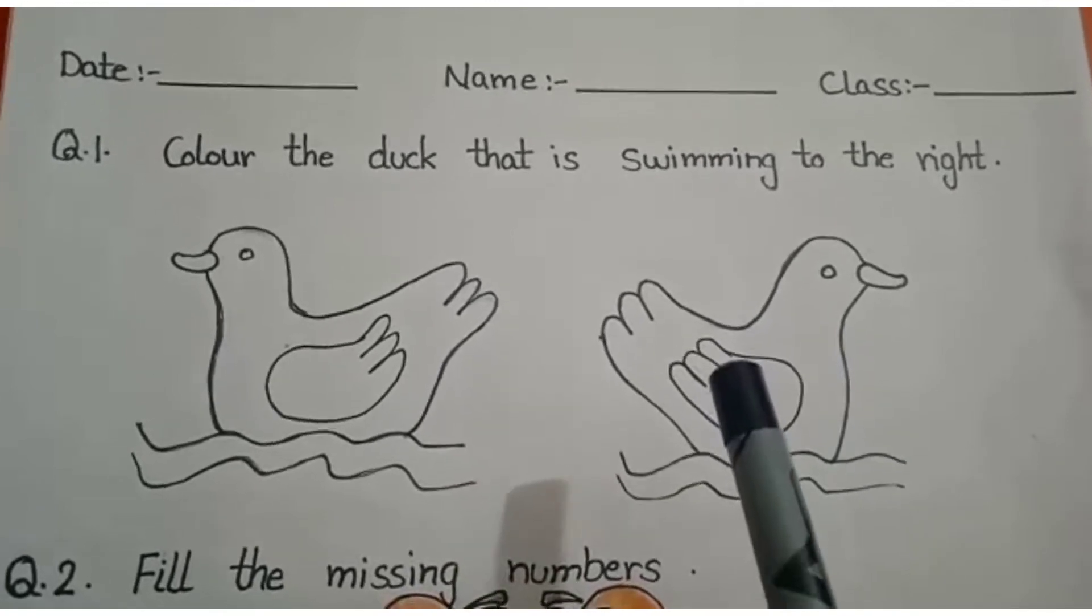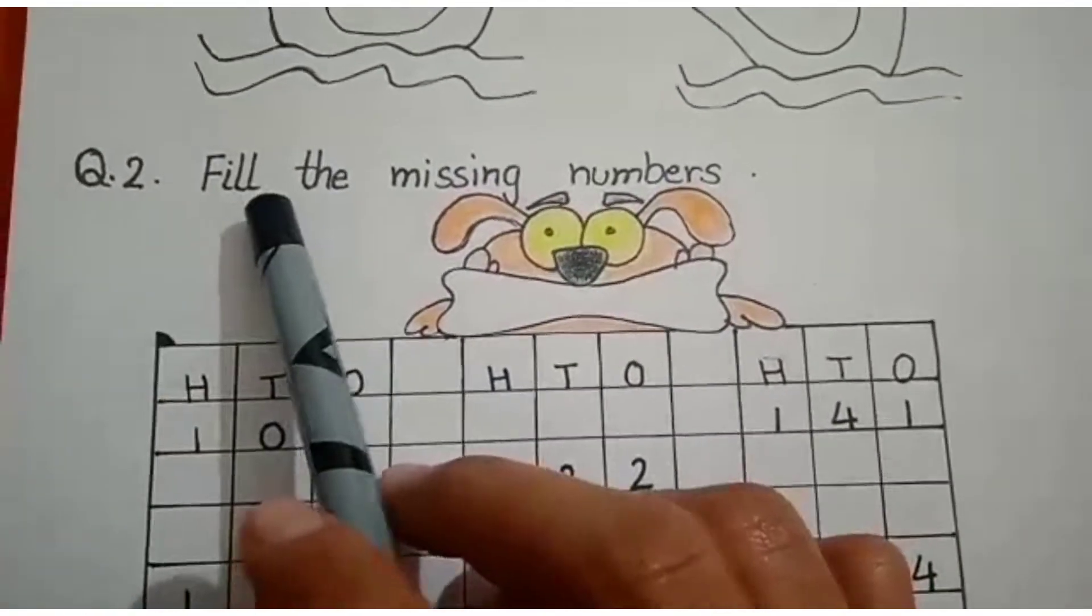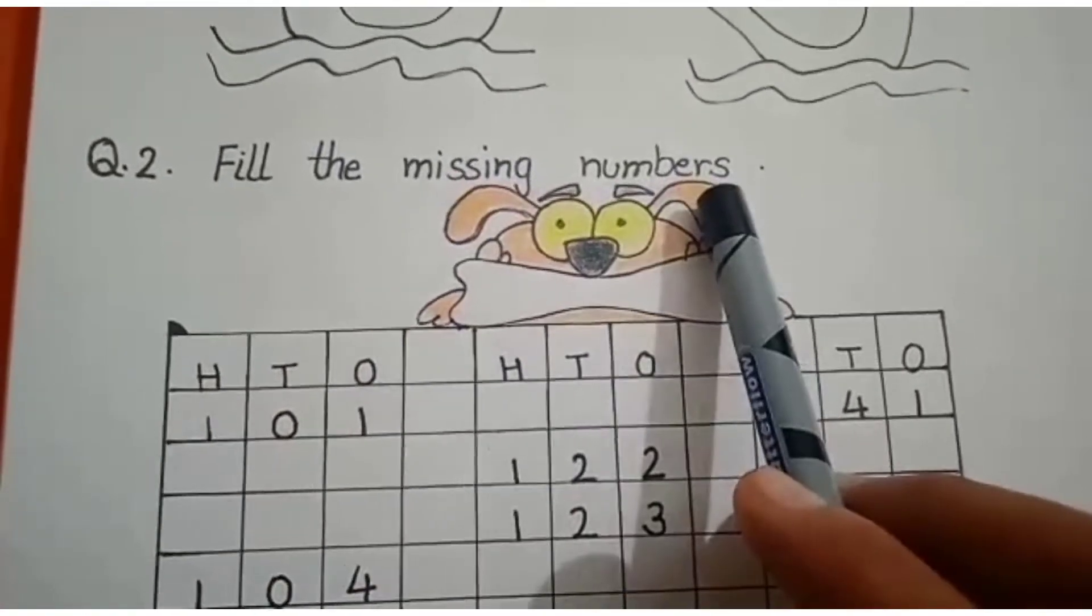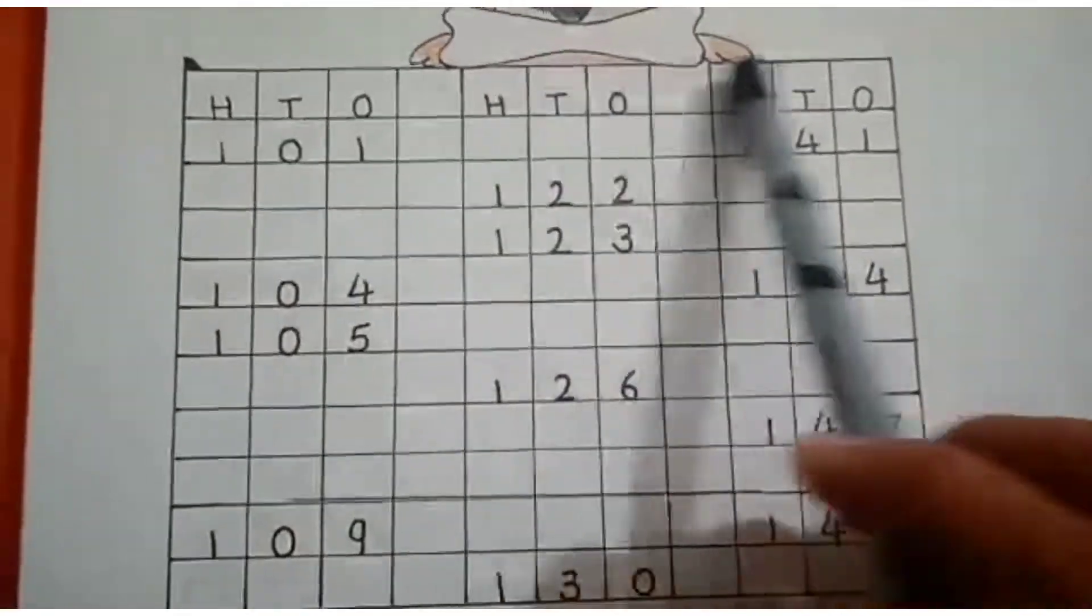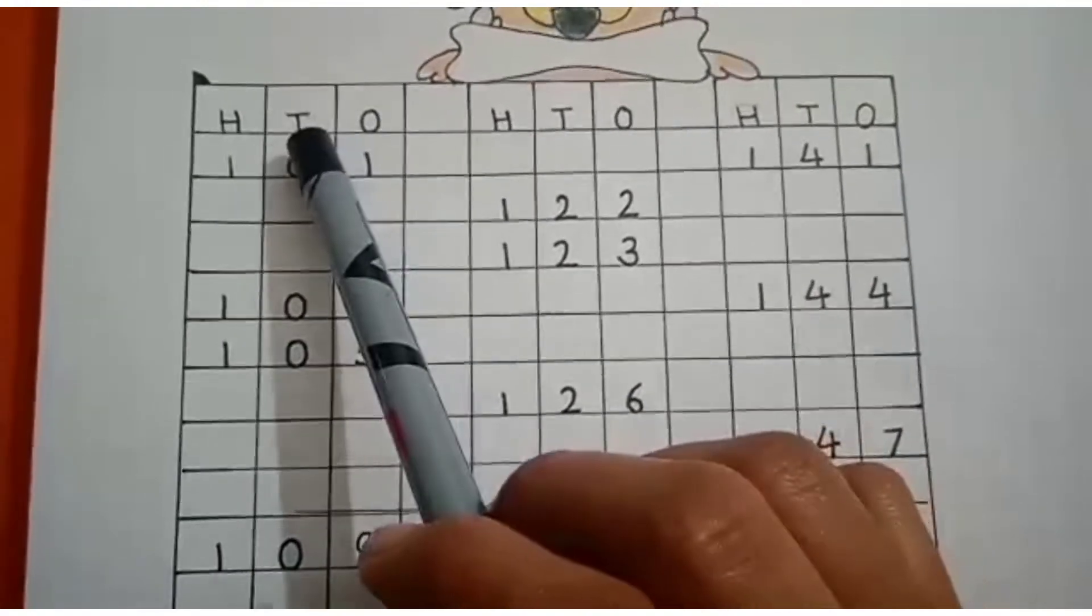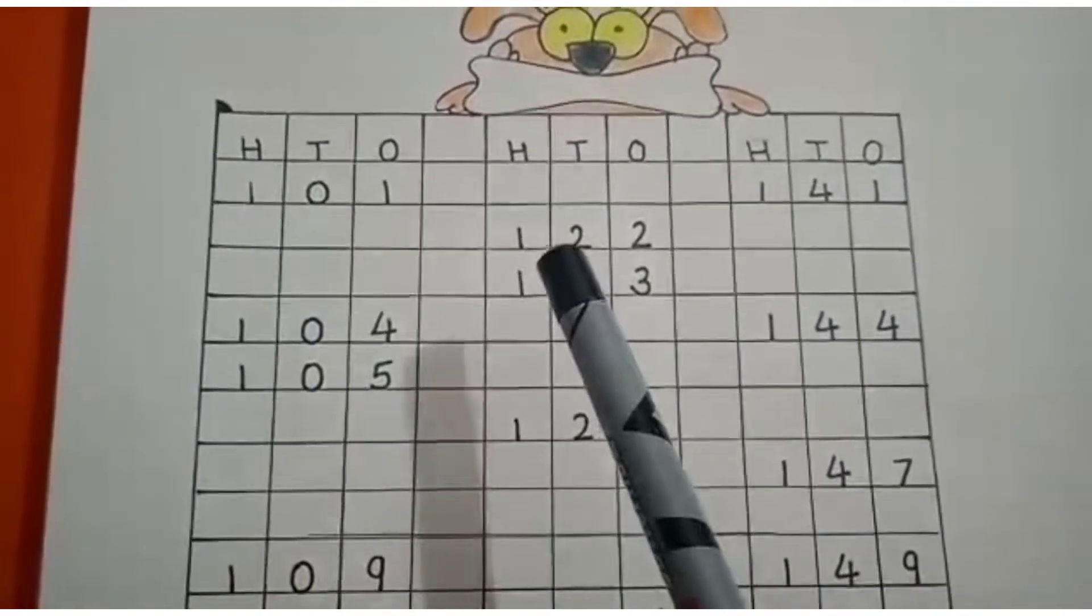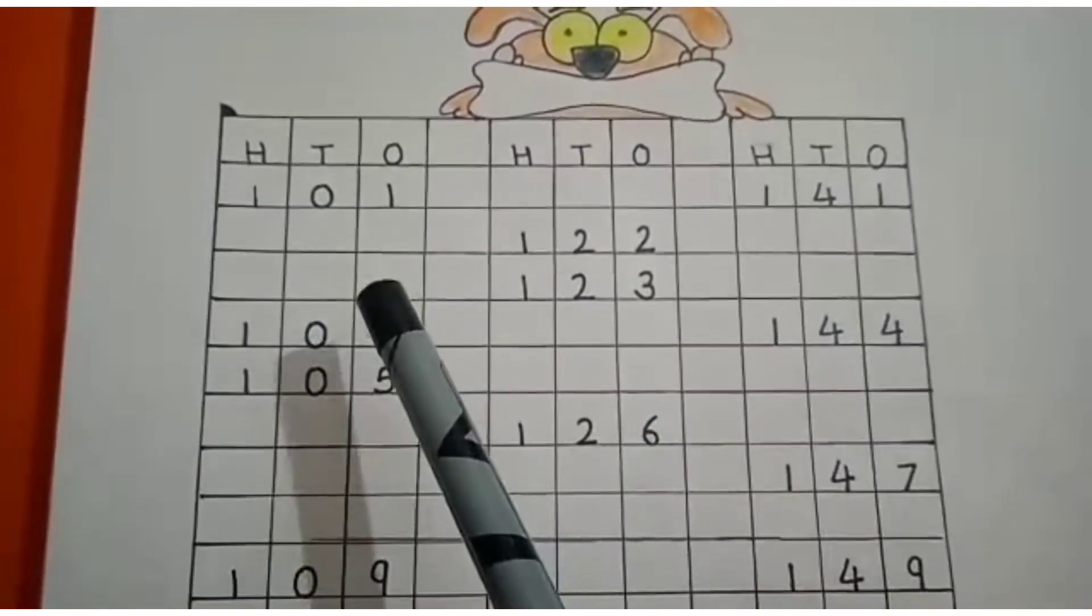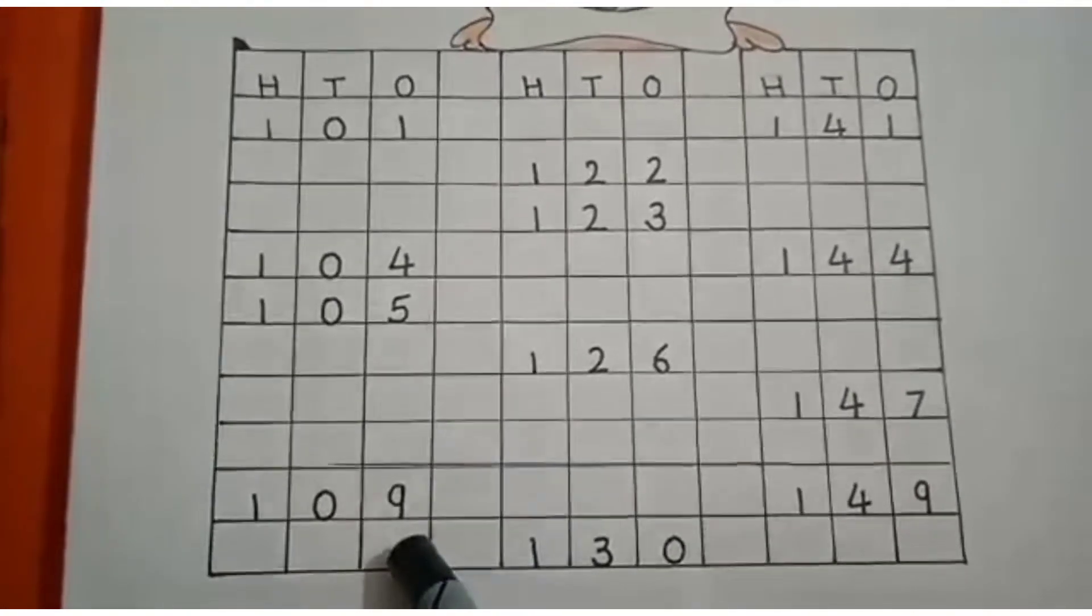Now, come to the next question. Question number 2: Fill the missing numbers. Look at here. Ones, tens and hundreds. Here, I have written few numbers and some numbers are missing. You have to find the missing numbers and write them in the boxes.